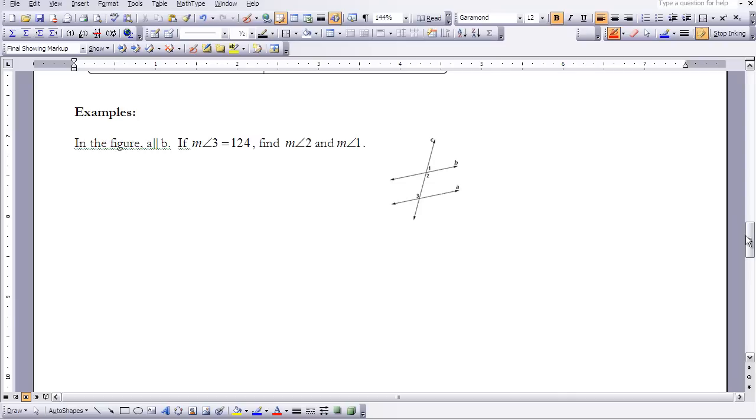Let's look at this example here. I'm given that my lines are parallel. So if my lines are parallel, then I know that all those different types of angles that we discussed above are going to be congruent to each other or equal.